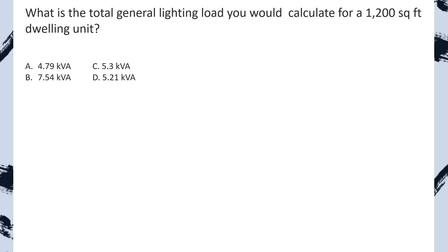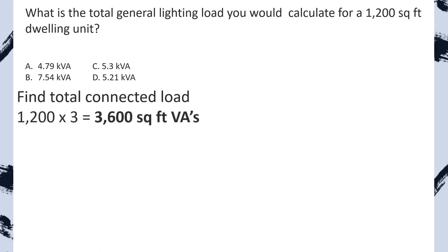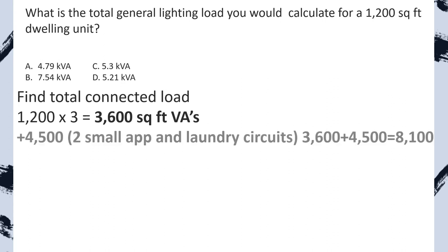What is the total general lighting load you would calculate for a 1,200 square foot dwelling unit? Notice I took out all the pointers from the previous slide. Anytime it asks for the total, you're always going to be applying a demand factor if there is one, and in every one of these calculations you're going to have the two small appliance and one laundry circuit. Step one, find the total connected load: 1,200 square feet multiplied by three VAs per square foot gives us 3,600 VAs. Now we tack on 4,500 for the two small appliance and one laundry circuit — 3,600 plus 4,500 equals 8,100.